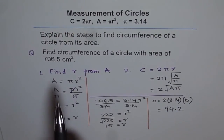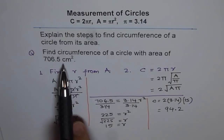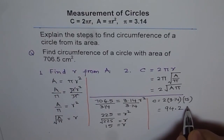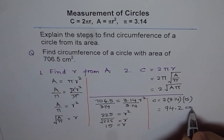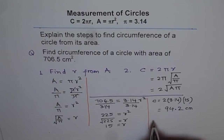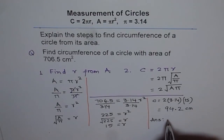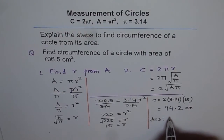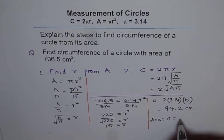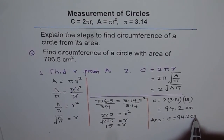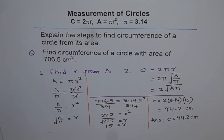Since the units for area are centimeters squared, our units for circumference will be centimeters. Therefore, circumference C equals 94.2 centimeters. I hope you understand this.